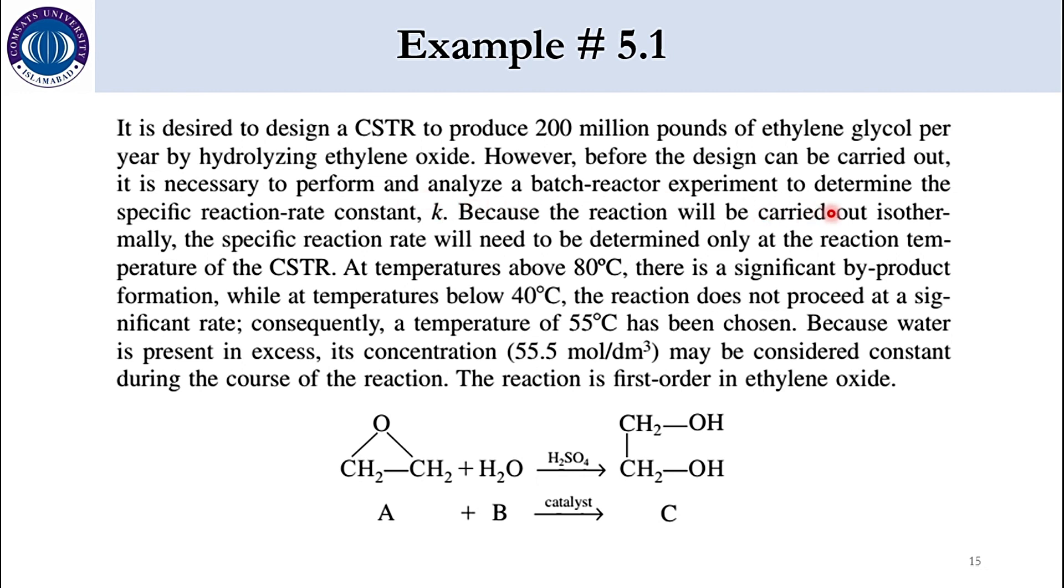Because the reaction will be carried out isothermally. Isothermally means inlet temperature or outlet temperature the temperature will remain the constant. The specific reaction rate constant will need to be determined only at the reaction temperature of CSTR because if you remember our previous lectures that k is a function of temperature. So accordingly when temperature is constant throughout the system it means that we have to just determine at this reaction conditions because the temperature will remain constant. At temperature is constant it's isothermal system.